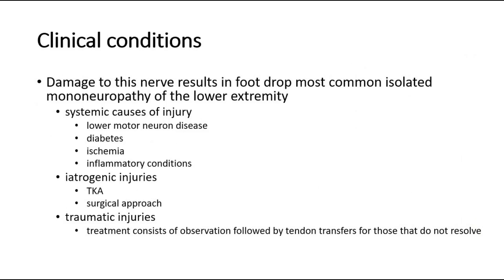For clinical conditions, damage to this nerve results in foot drop, which is the most common isolated mononeuropathy of the lower extremity. It can be due to systemic causes of injury including lower motor neuron disease, diabetes, ischemia, and inflammatory conditions, or iatrogenic injuries like TKA or other surgical approaches, and traumatic injuries.